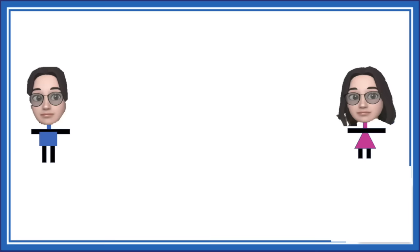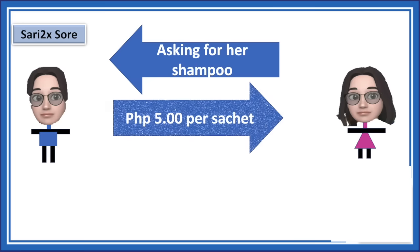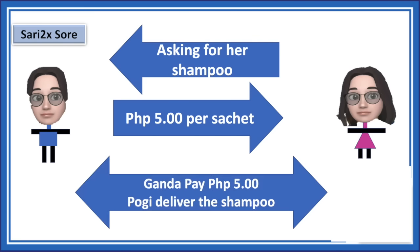Let me start by giving you an example. While Poogie owns a store, Ganda went to the store and was looking for a shampoo. She found the brand she was looking for and asked Poogie how much it is. Poogie said five pesos for one sachet. So Ganda pays five pesos and Poogie gave her the shampoo. That's it — that is a good example of a contract of sale. It's as simple as that. The moment Ganda pays five pesos and Poogie gives the shampoo, the contract of sale is consummated. However, simplicity turns into complexity the moment a legal issue arises, and these legal issues are what we will discuss.